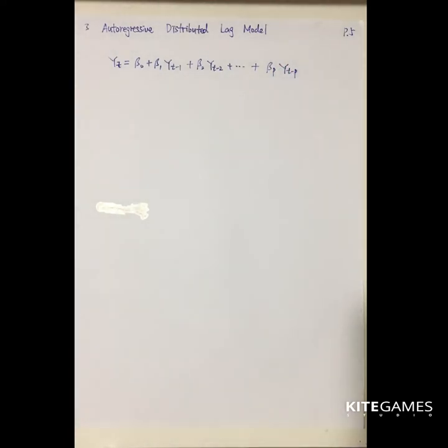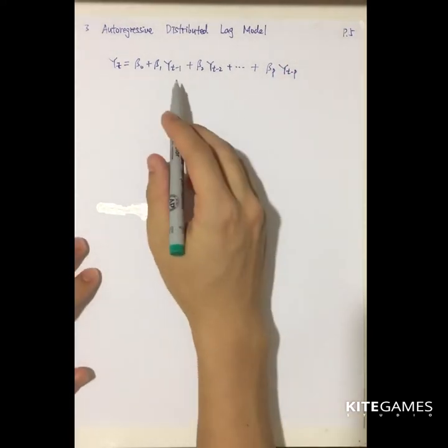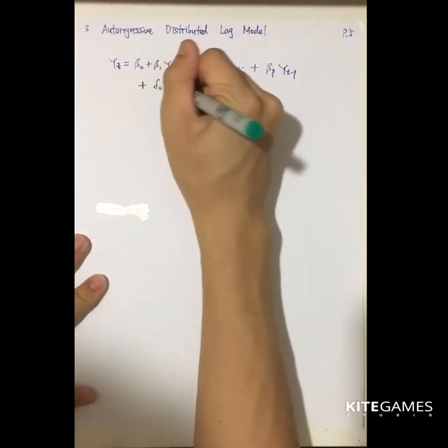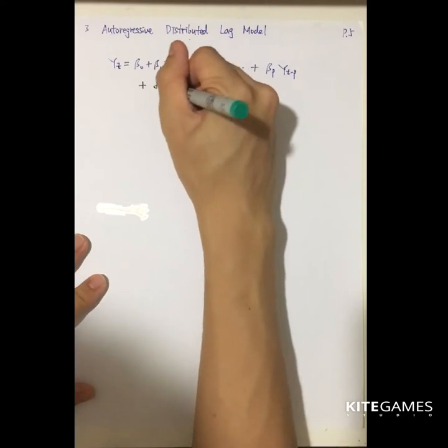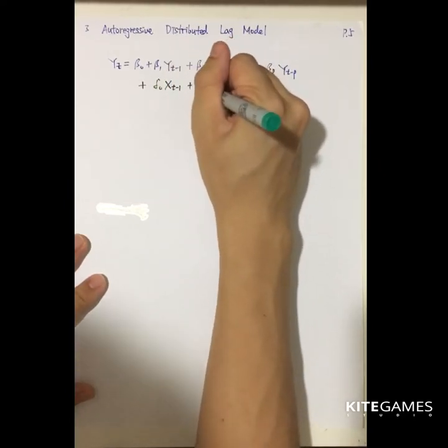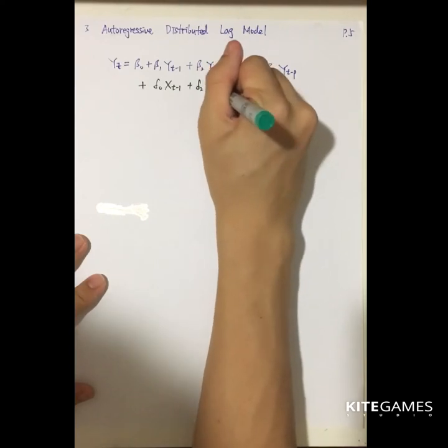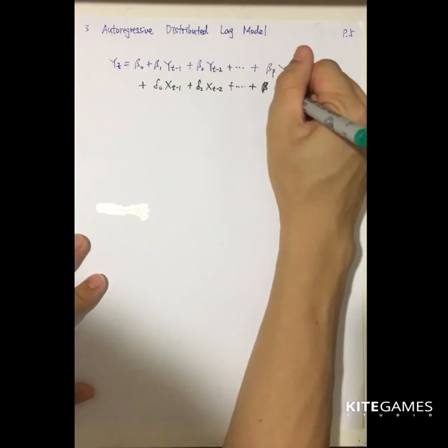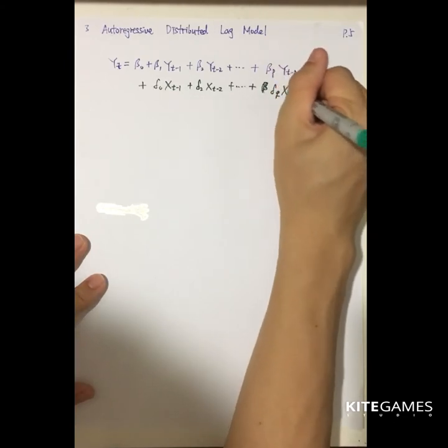But in some of the economic theories, the variables, other than depends on previous value, they also depend on the value of another variable, say t minus 1, so you need to add another lag variables up to delta q xt minus q.